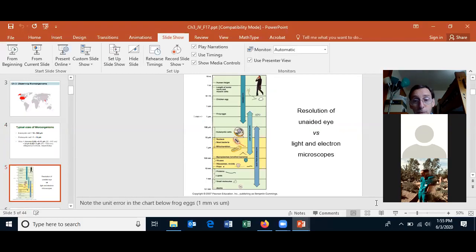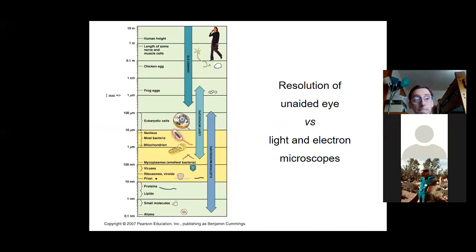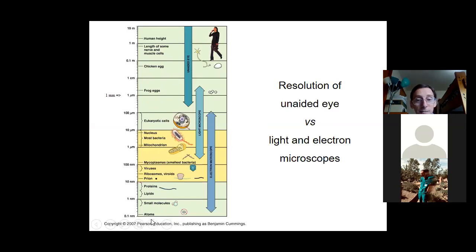You should know the relative sizes of things. A human is bigger than a chicken egg, which is bigger than a frog egg, which is bigger than a eukaryotic cell, which is bigger than a bacterial cell, which is bigger than a virus, which is bigger than a protein molecule, which is bigger than an atom. This scale shows what you can observe under the light microscope, what you can observe under the electron microscope, and what you can observe with the human eye.